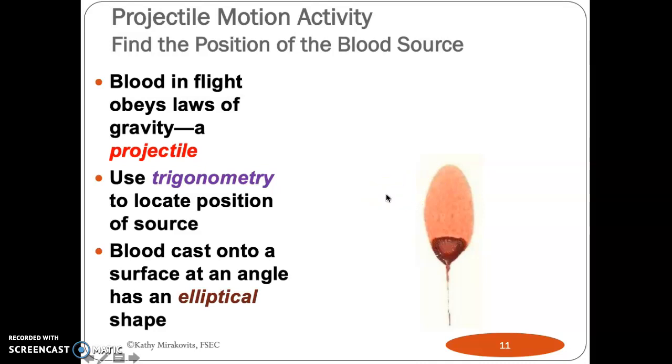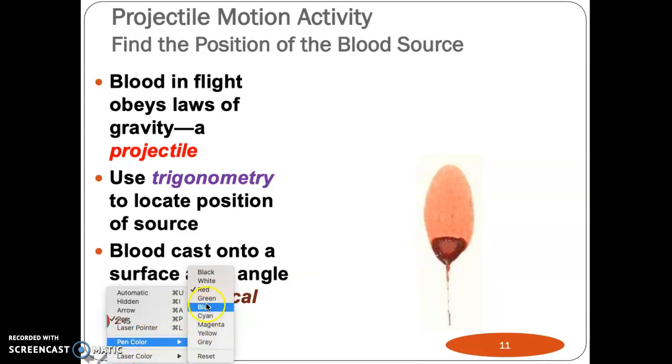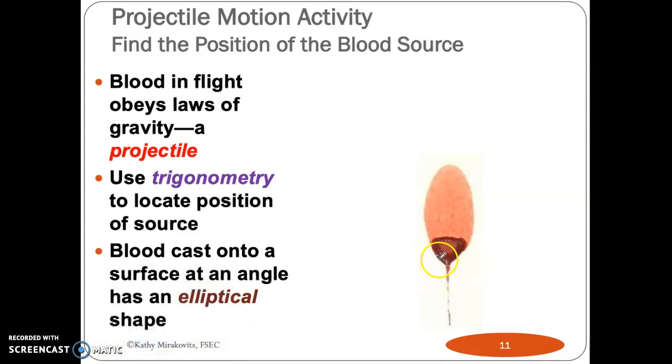When you are measuring, because we're going to be doing some measuring in a minute, a couple of things to remember. You do not measure the tail right here. The tail does not include it in the measurement of the length of the drop. And then the other thing that you have to keep in mind is that when you're doing the measurement, this little bit right here you may or may not include that. You want to make sure that you round the ellipse at the bottom the way it would be if there were not a tail attached. But we're going to be measuring the width and then the length.